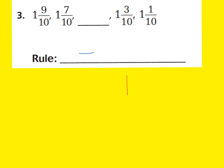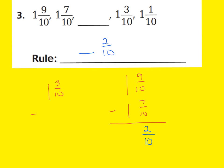A way we can do this is subtract 1 and 7 tenths from 1 and 9 tenths. 1 whole and 9 tenths minus 1 whole and 7 tenths — my denominators are both the same, so all I have to do is subtract my numerators. 9 minus 7 is 2, and I'll have tenths as my denominator. And 1 minus 1 is 0. So my rule is decreasing by 2 tenths. Let's prove it once more: 1 and 3 tenths minus 1 and 1 tenth also gives 2 tenths. Therefore my rule is to decrease by 2 tenths.